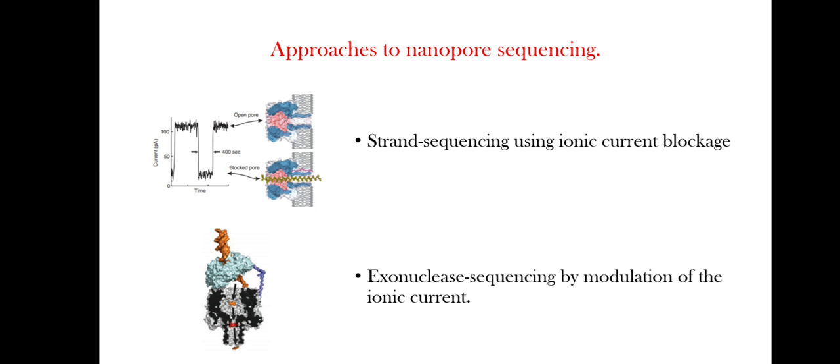The approaches to nanopore sequencing include four types. The first one is strand sequencing using ionic current blockage. A typical trace of ionic current amplitude passed through an alpha-hemolysin pore clearly differentiates between an open pore and a blocked one.